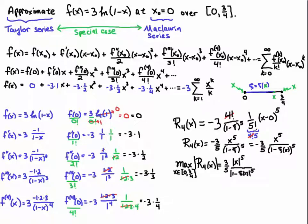Now I have to find the maximums for this expression here: the absolute value of x to the fifth and the absolute value of 1 minus xi to the fifth. If I look at x to the fifth, I'm going to use the extreme value theorem. The derivative of x to the fifth is 5x to the fourth, which is always greater than or equal to zero on this interval. So that means it's always increasing, so the max is going to occur at the right endpoint, 3 fourths.